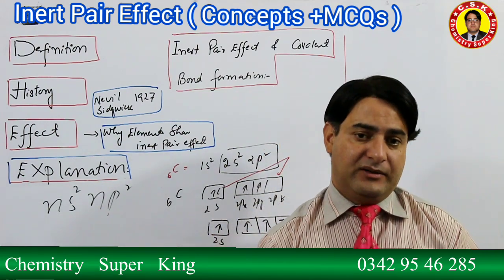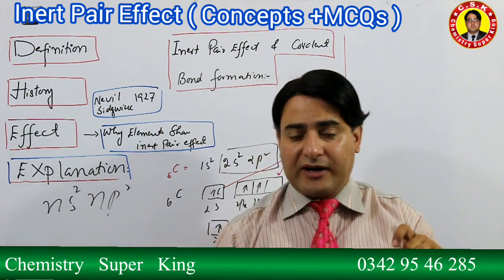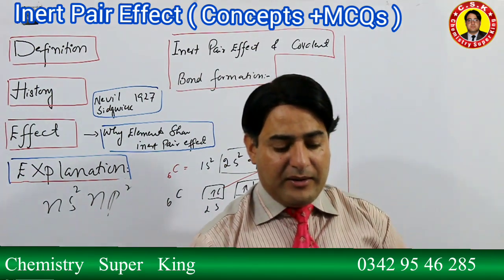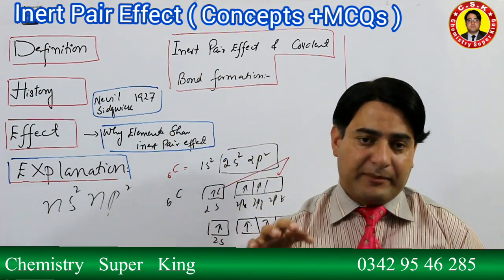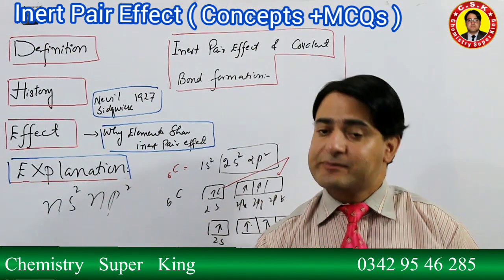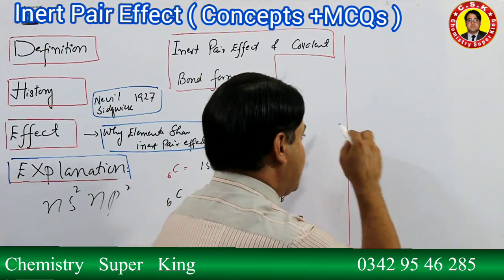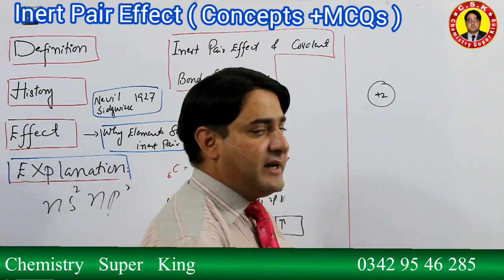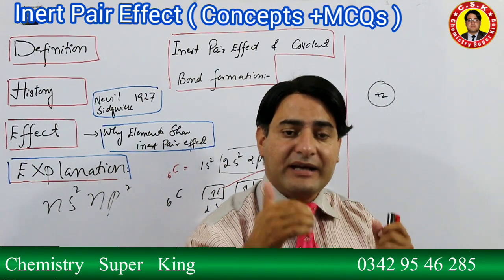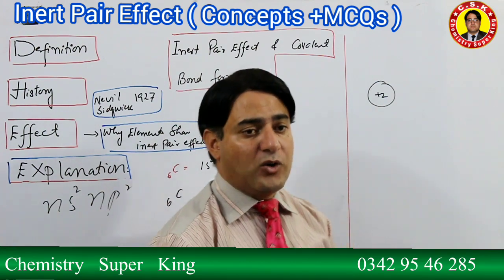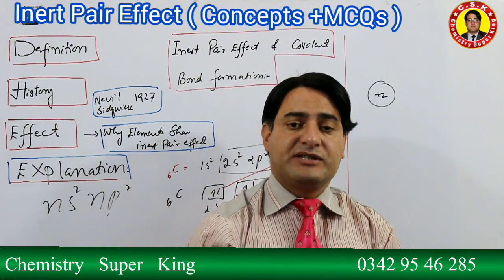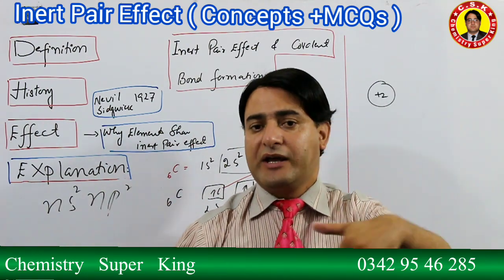Remember: if Inert Pair Effect does not occur, the +4 oxidation state gives covalent bonds. If Inert Pair Effect occurs, the +2 oxidation state gives ionic bonds. When oxidation state is +4, the cation is small with high charge density - it attracts the anion strongly, polarizes it heavily, and electron sharing (covalent character) becomes dominant over ionic character.